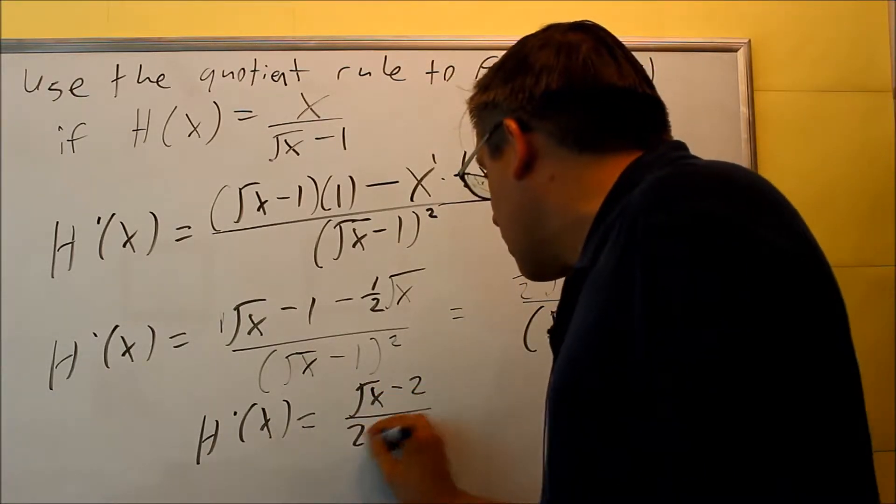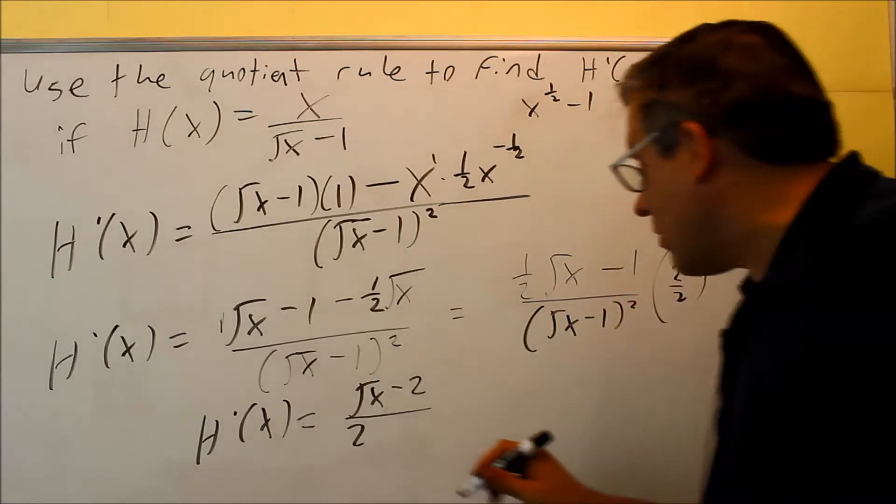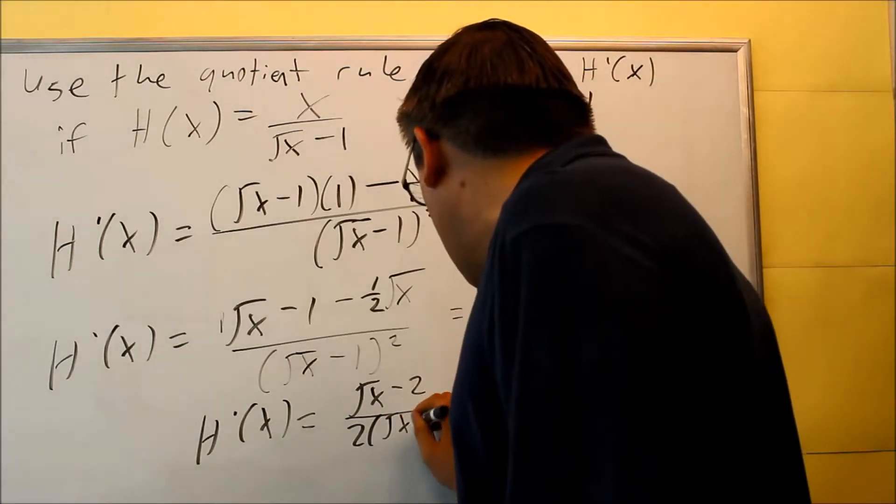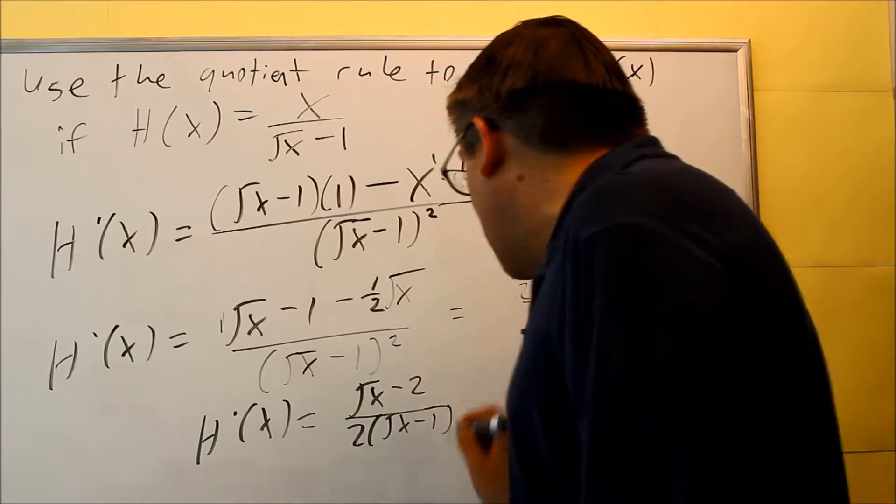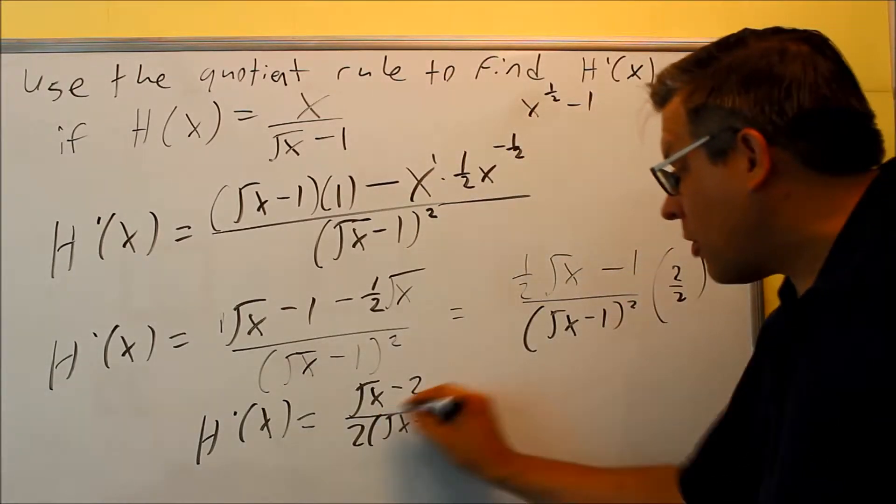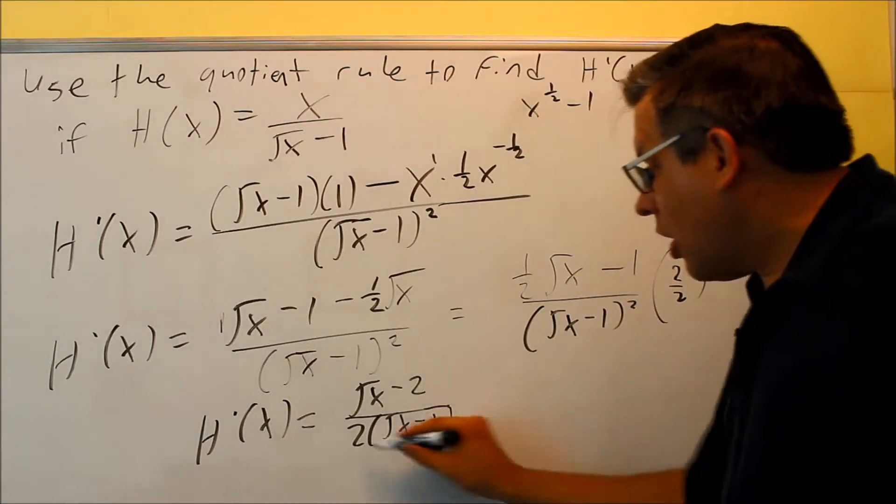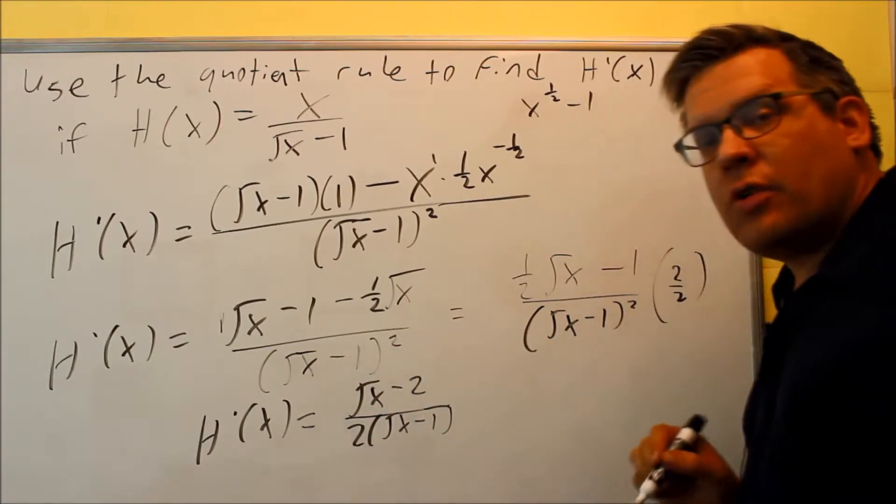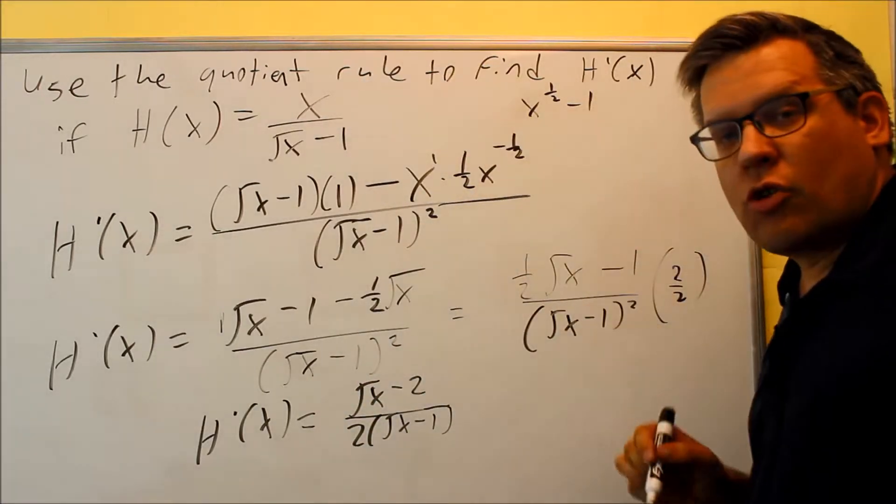And then don't forget there's also a 2 on the bottom as well, because you're multiplying top and bottom by that. So then you get square root of x minus 1 inside. And you can leave it in the factored form, or if you want to multiply it out, that's fine. But this right here, that would be your derivative using the quotient rule.